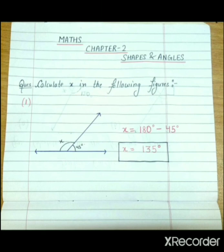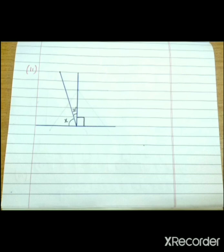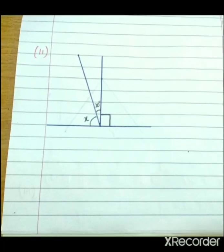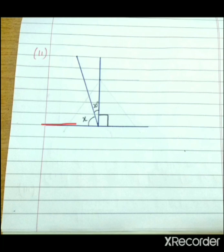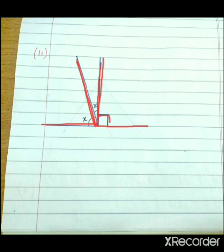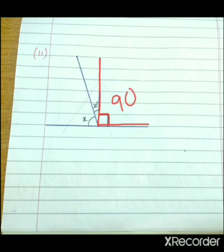So this angle is equals to 135 degree — here you can see the solution. Now the next figure is this. In this figure, this is angle x and this is angle 20 degree. There is one more angle, but the measure of this angle is not given. As we already know, this is the baseline and this line is standing straight on the baseline, so this is a right angle. What is the measure of a right angle? It is 90 degree.